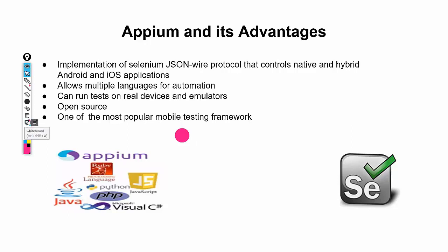Now, why is Appium important and what are its advantages? Appium is a tool that runs on the JSON Wire Protocol — the same protocol used by Selenium. So if someone has worked with Selenium it's easier to work with Appium, which is essentially an implementation of the JSON Wire Protocol for native and hybrid applications. A major advantage is that Appium allows you to write code in many languages: Java, Ruby, .NET/C#, and others.